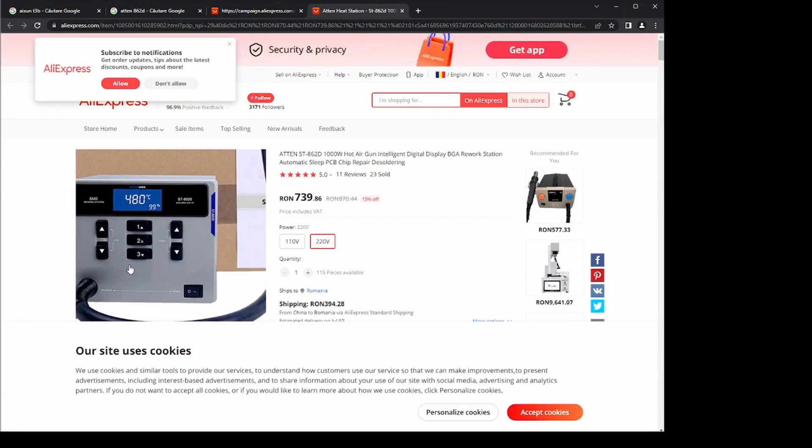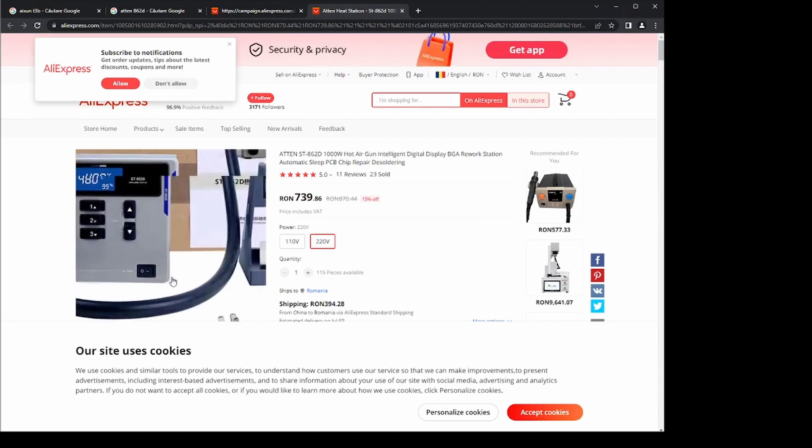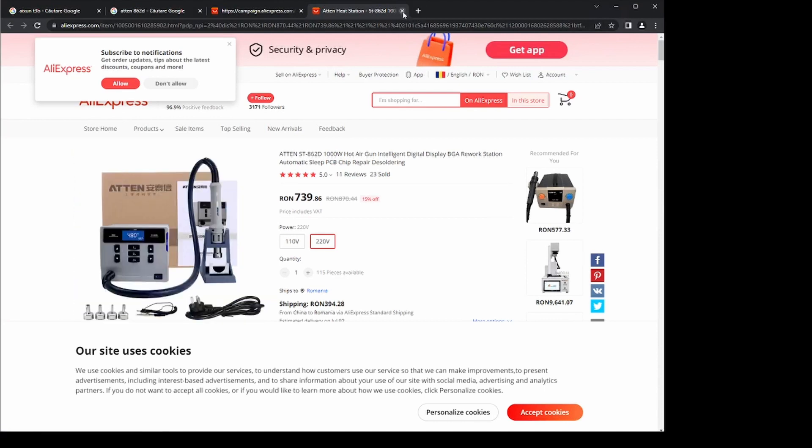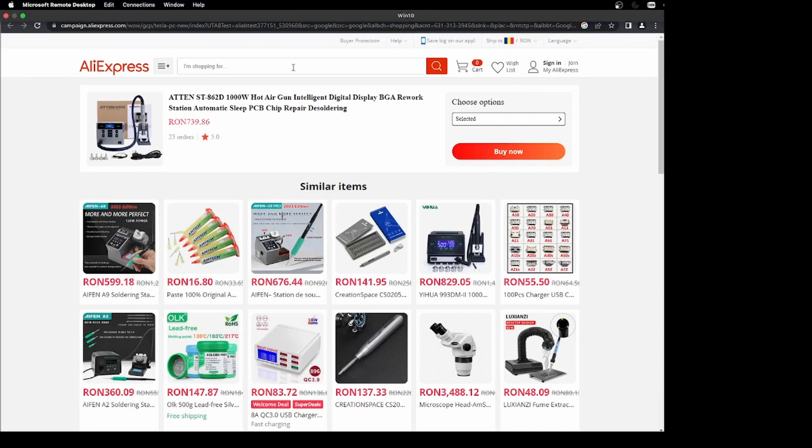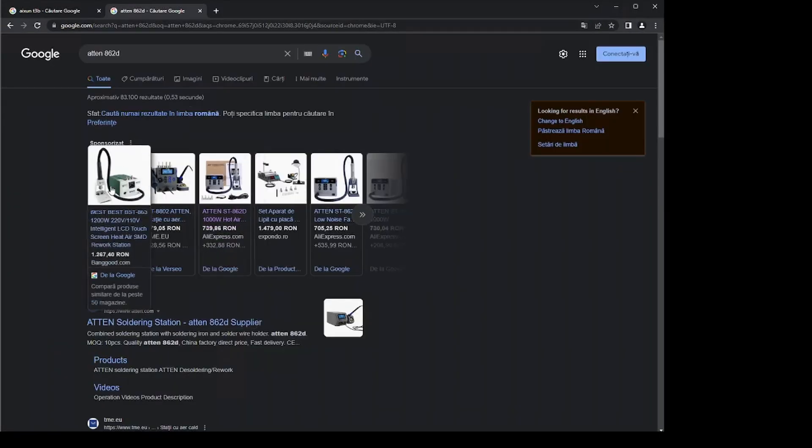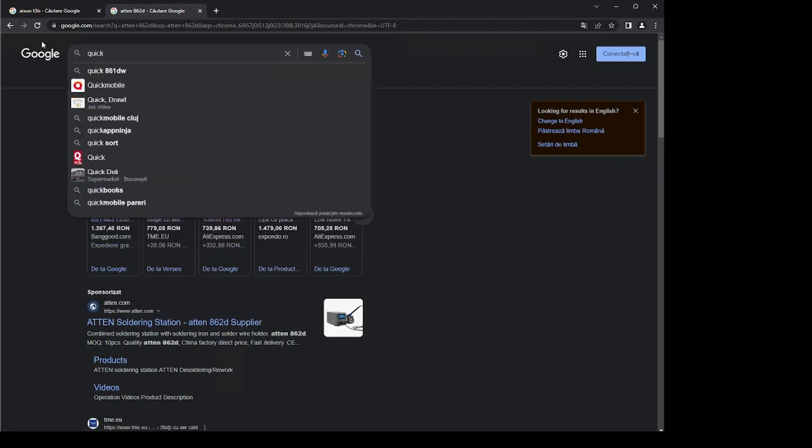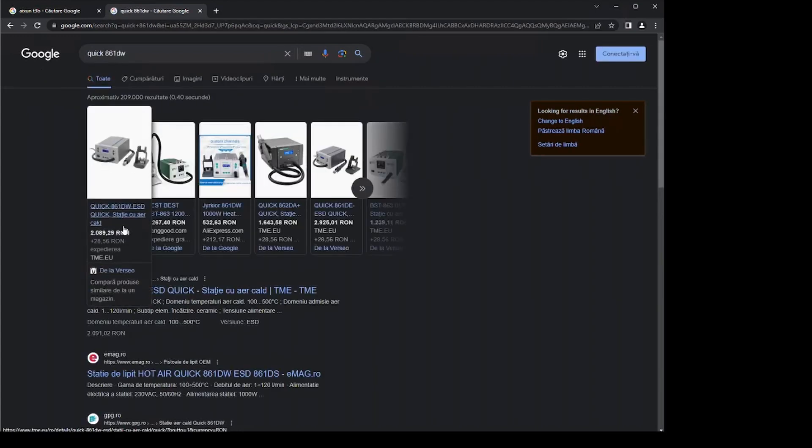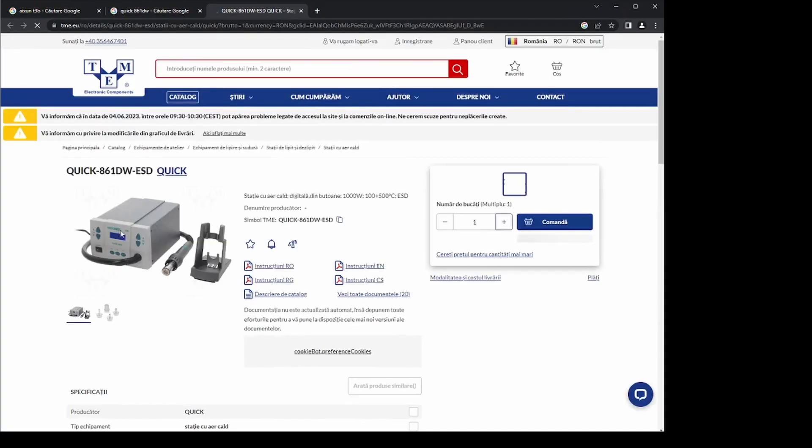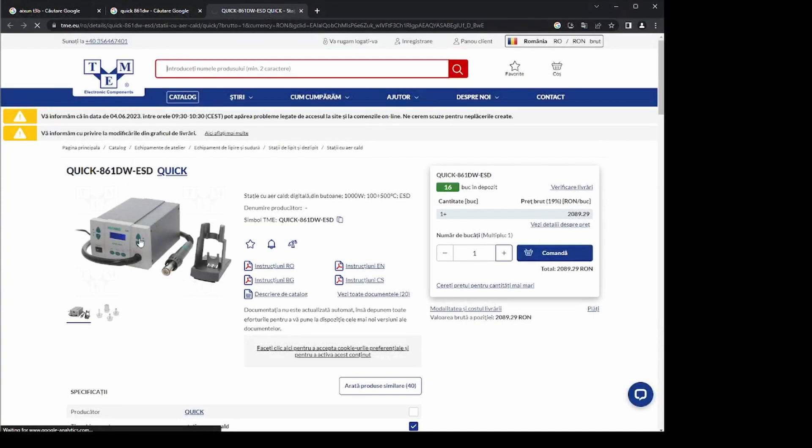This is a great hot air gun machine. You can also go for the Quick hot air station, which is also cheap and extremely reliable. I think it's this one, 861DW. Quite similar to the Atten. I like Atten best but they are the same quality. So, choose one of these. Do not go cheap. Do not go for crap things on it.